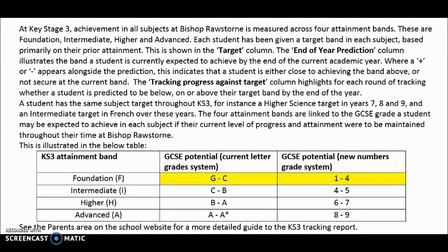Roughly speaking, a student who in the past would have expected to achieve between a G and a C grade at GCSE would now be expected to achieve between a grade 1 and 4, through to an A/A* grade now being graded at an 8 or a 9 using the number system. Based on prior attainment, we are able to project students' likely GCSE grade in every subject. So a student who historically would be expected to achieve a grade C or B would now be expected to achieve a grade 4 or 5.